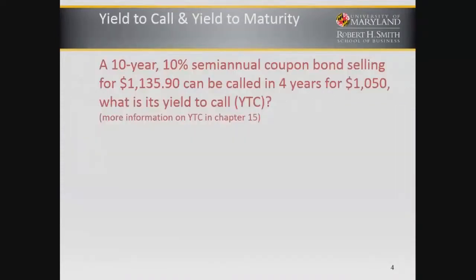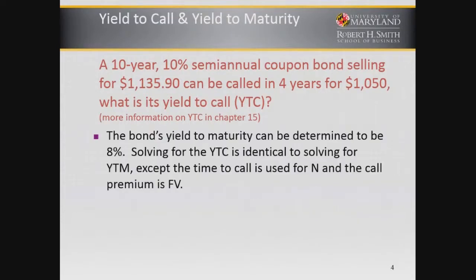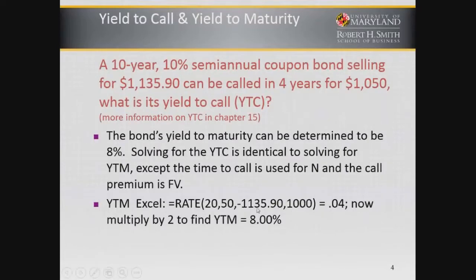But if it is a 10-year, 10 percent, semi-annual coupon bond selling at a price above par that can be called in four years, maybe it might be called. So the bond's yield to maturity can be determined to be eight percent. We are going to find the yield to call. This time, instead of using 20 — in other words, 10 years for N — we're going to put in eight for four years for N, and for the future value, instead of putting in a thousand, we'll put in the call premium. So we would be using the RATE function.